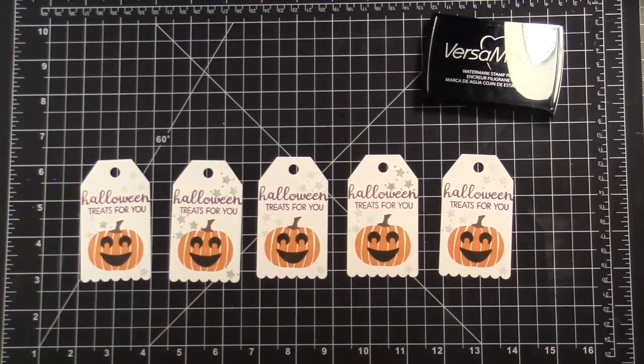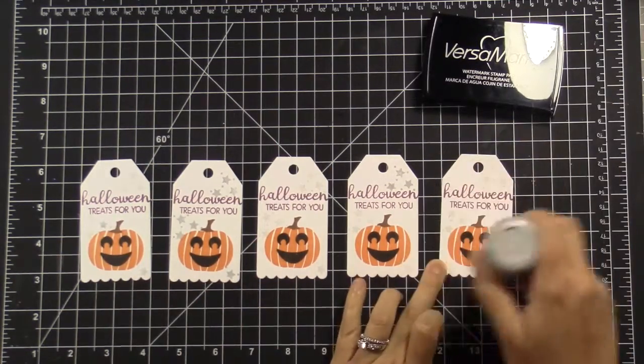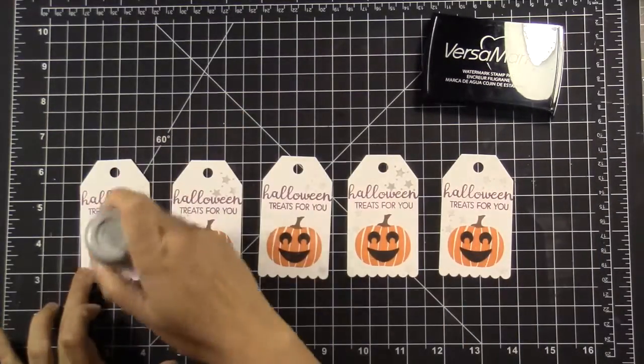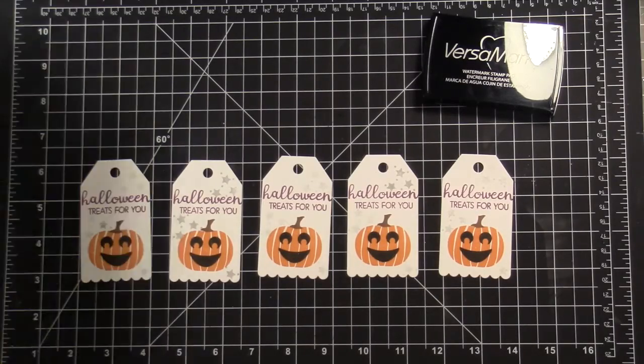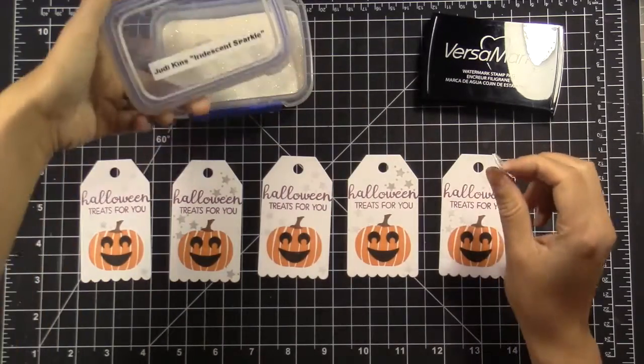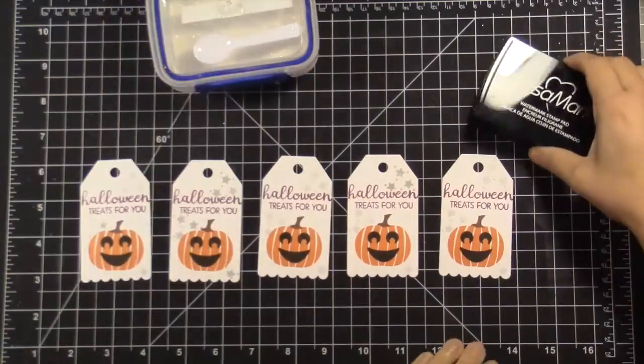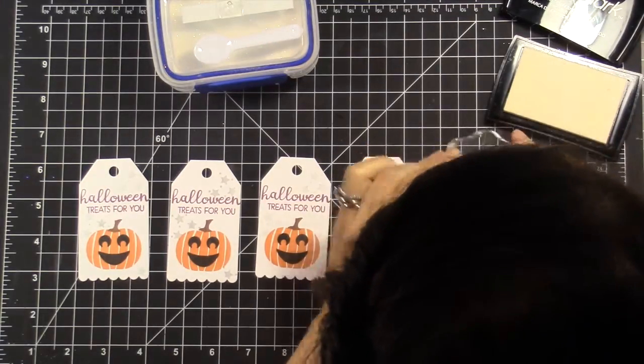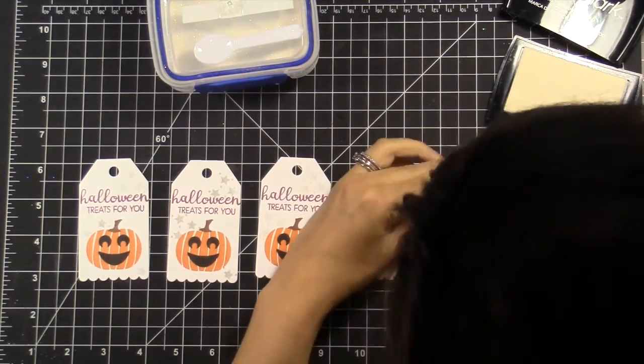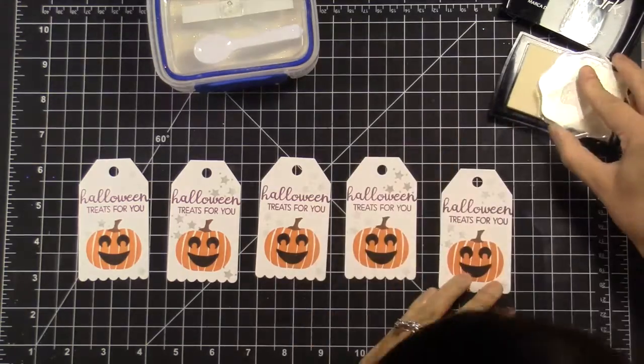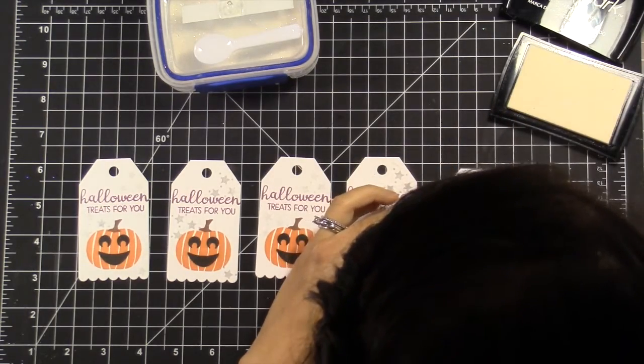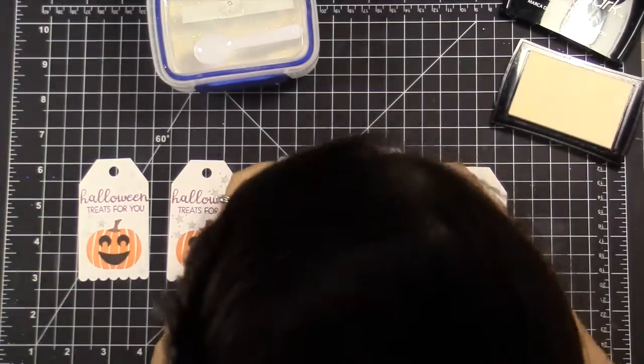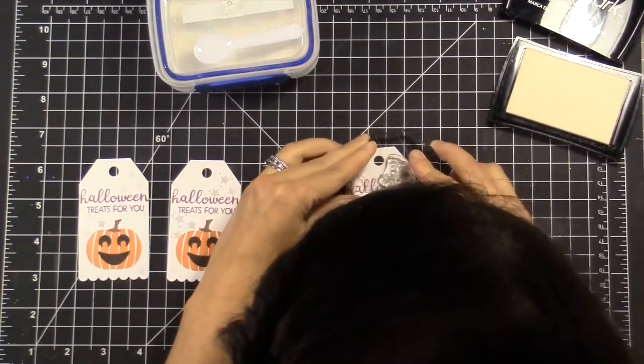So once I went ahead and did that, I could have just left it as is. But like I said, it needed a little bit of sparkle and shimmer. So I'm taking my EK Success Powder Tool and powdering down all of these tags, and then I'm going to take my Versamark ink. This is the Judikin's Iridescent Sparkle Embossing Powder, but you can use any type of glittery embossing powder or even a glitter brush pen would work fine. I just thought that this would be quicker. So I'm just stamping the same clusters that are on the block in Versamark ink and then stamping directly over onto the stars.